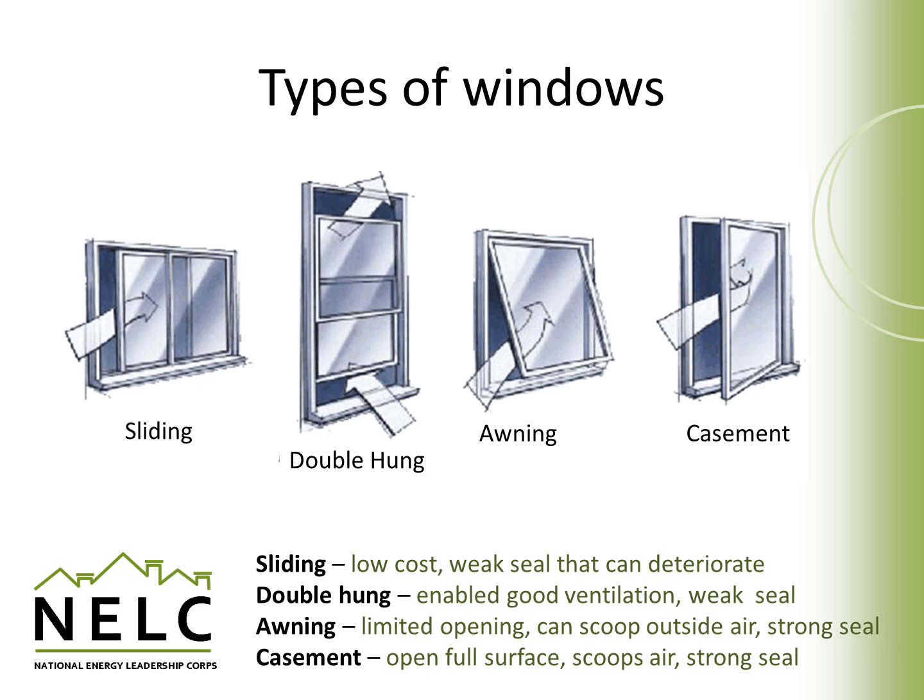Casement windows have an advantage of being opened up over their full surface, similar to an awning window, but they can usually open a little bit wider. These can scoop air from the outside and, because of their hardware, can result in a fairly strong seal and less infiltration than some other forms of windows. All types of windows are susceptible to leaking air around their perimeter, and care is typically taken now in modern homes to have a very good seal around that perimeter to eliminate air leakage between the window and the wall frame.